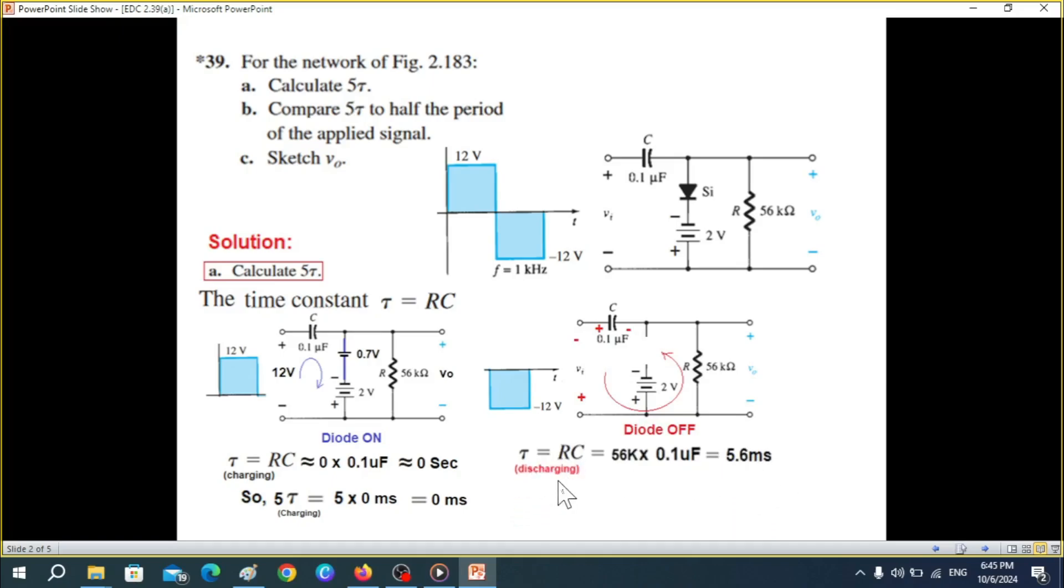So for τ, I will call it τ, the charging will be 56k multiplied by the capacitor, and it is 5.6 millisecond. And so 5τ charging will be 5 multiplied by 5.6 is 28 milliseconds. So this is the answer for the first part, part A.